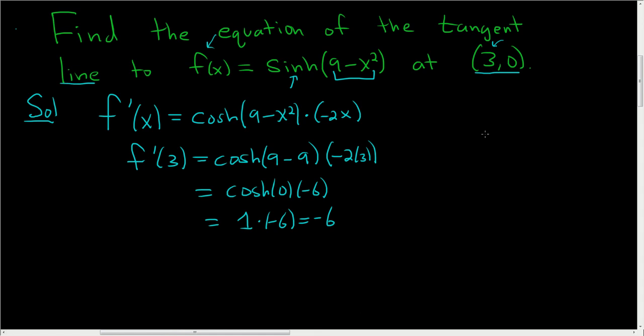If you ever forget that the cosh of 0 is 1, just recall what cosh is. It's the average of e to the x and e to the negative x. And so if you plug in 0, you end up with e to the 0 plus e to the 0 over 2. e to the 0 is 1, so you get 1 plus 1 over 2, and 2 over 2 is 1. Piece of cake.